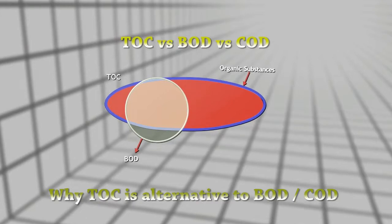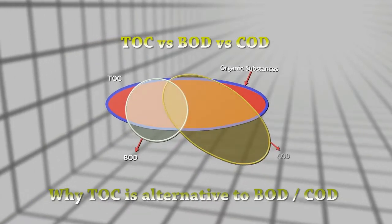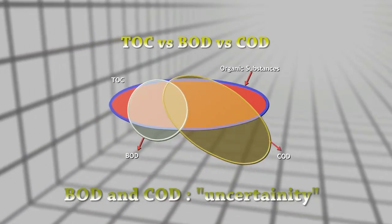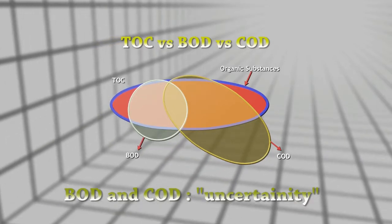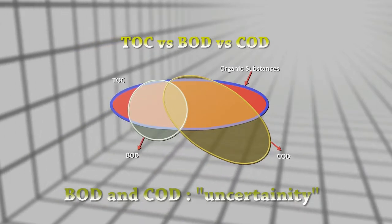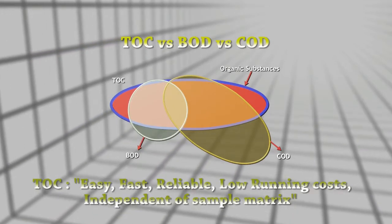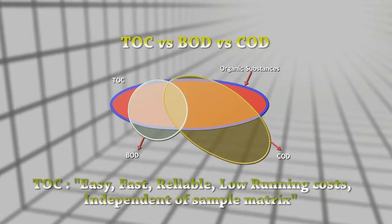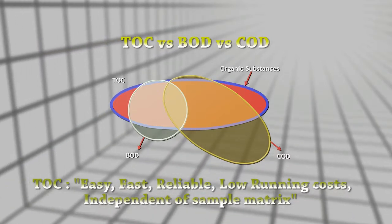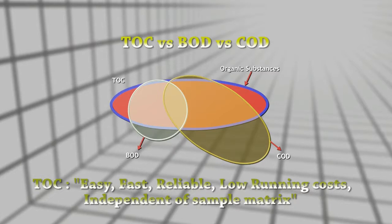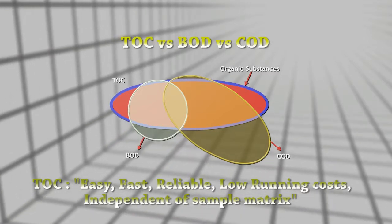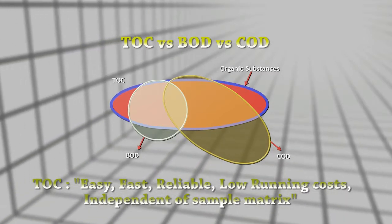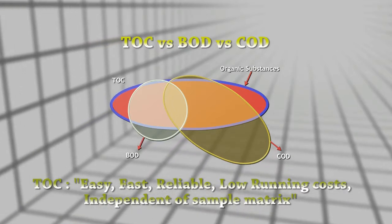Certain pain points in conventional BOD and COD measurements are margin of error, time consumption, usage of toxic and harmful chemicals, and incurring cost components. TOC offers a swift and reliable solution to all these shortcomings. Furthermore, BOD and COD values can be derived from TOC via correlation, which makes it a one-stop solution.